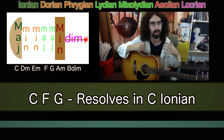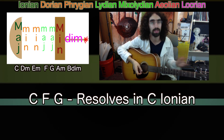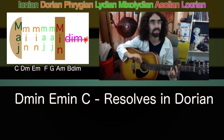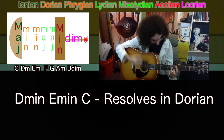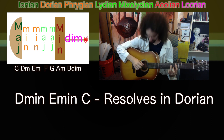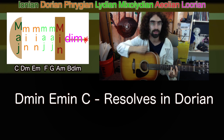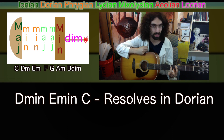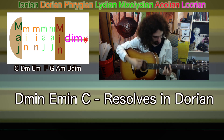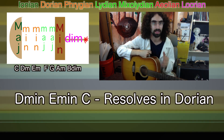Now, what if we play a D Dorian chord progression? It should resolve to the D minor chord, even though we're still in the key of C. So I'm going to play this progression: D minor, E minor, C, D minor. [plays] It sounds like we've resolved pretty nicely to that D minor chord, even though we're still in the key of C. C doesn't sound like home base anymore — D minor sounds like home base. And when that is true, you are definitely in D Dorian.